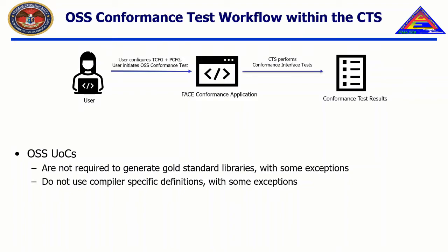Interestingly, when testing OSS USEs, they are not required to generate gold standard libraries, use compiler-specific definitions, or use allowed definitions, with some exceptions. Instead, the CTS provides conformance interface tests to check the needed interfaces that are provided by the operating system. The user configures the toolchain and project configuration file, and immediately tests the OSS USEs for conformance.